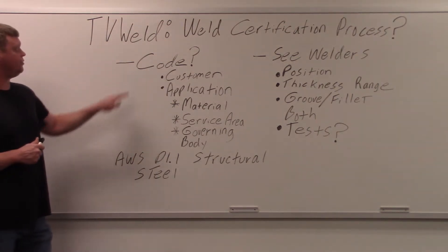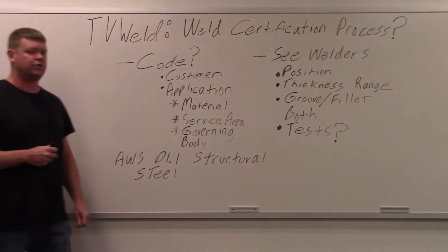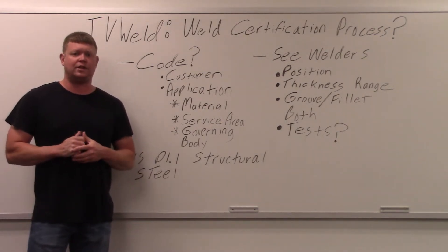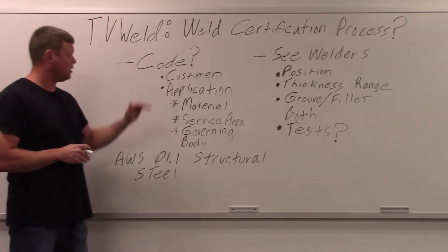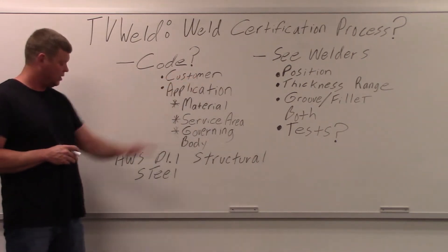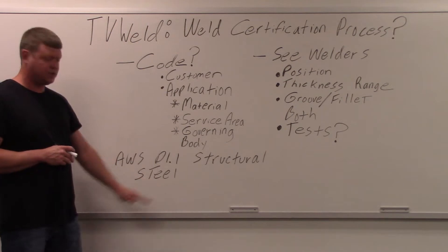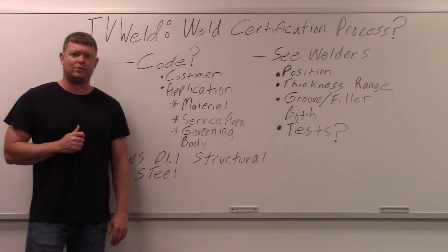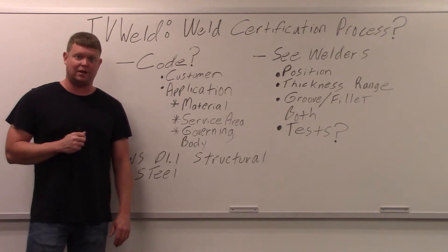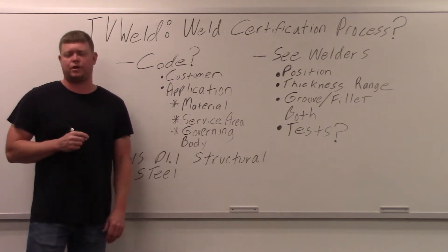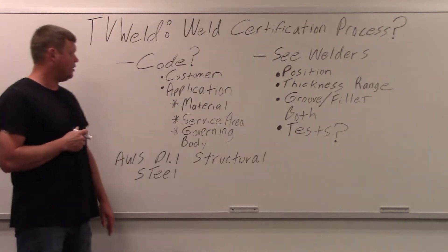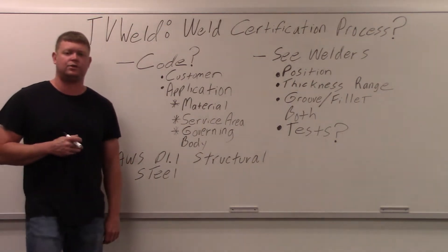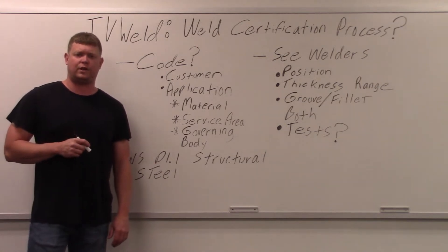The first thing you need to do is figure out what code you're going to do your certifications to. The first and easiest way - if you're lucky - you call the customer and they tell you: AWS D1.1 structural steel, or ASME Section 9, or whatever the code is. A lot of times that doesn't happen - they don't know the code they need. So if you run into that situation, you've got to figure out the code based on the application of what you're doing.